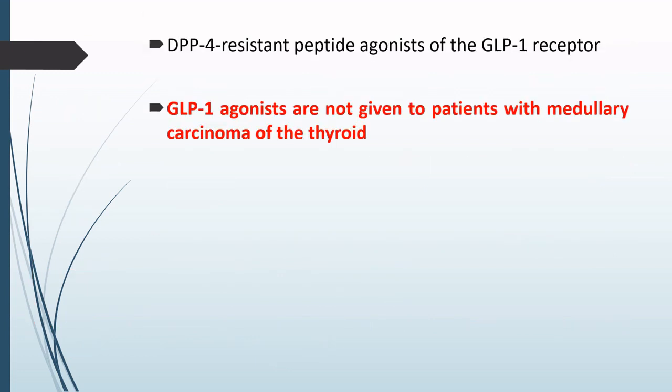GLP-1 is degraded by the enzyme DPP-4. So if we want to make an agonist for the GLP-1 receptor, it must be DPP-4 resistant. These GLP-1 receptor agonists are DPP-4 resistant and hence cannot be degraded by DPP-4.